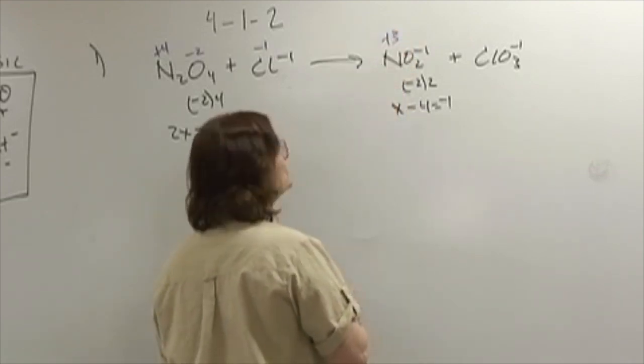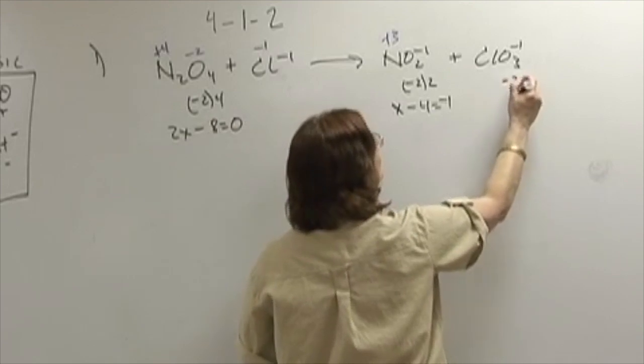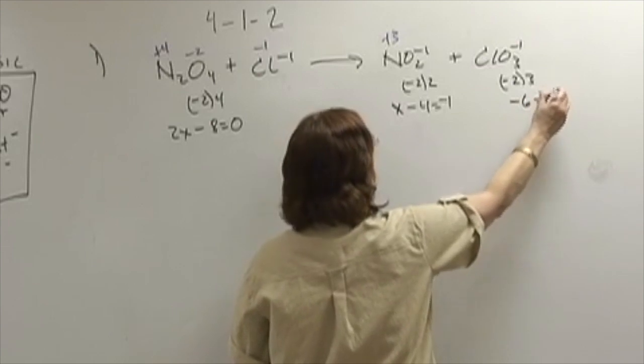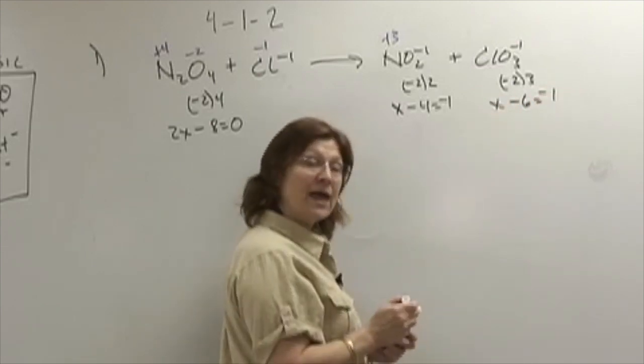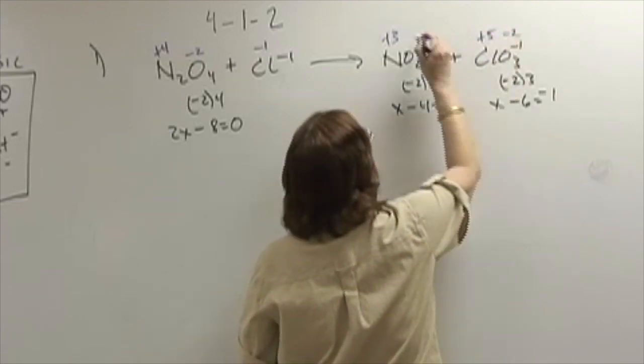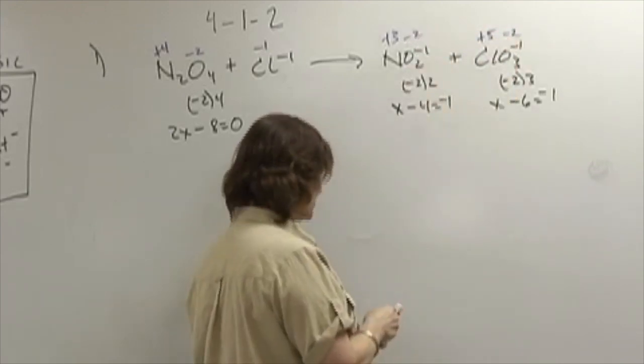Again, oxygen is in the negative position, it is -2. There are three of them, giving me -6. The whole polyatomic ion is -1, and therefore in this case, chlorine is +5. Oxygen in both cases is -2 and is not changing.